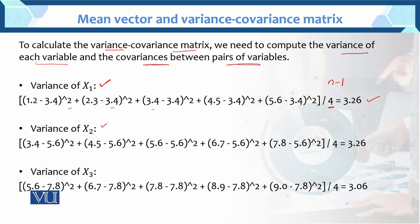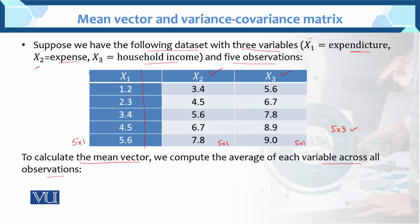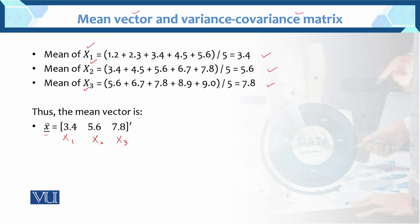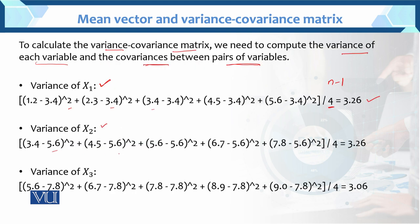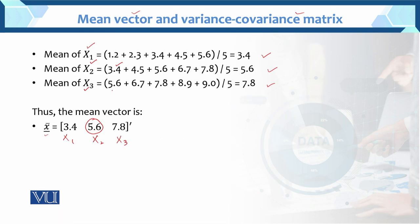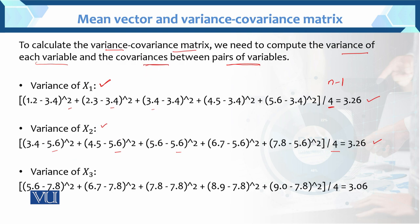Again, variance of x2: we take the second variable x2. Each observation minus its mean 5.6, whole square, divided by 4. So variance of x2 is obtained. Then variance of x3: the third variable — 5.6 minus its mean 7.8, whole square, divided by 4 (n minus 1). Variance of x3 = 3.06. Mean vector and variances are now found.